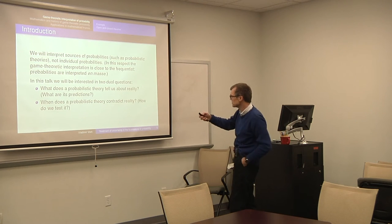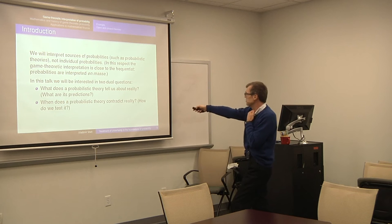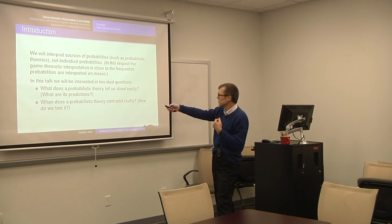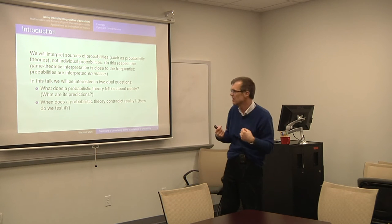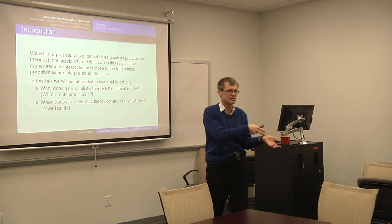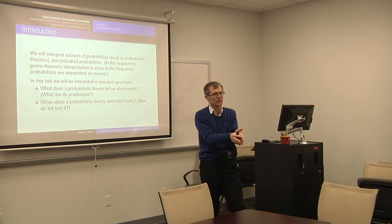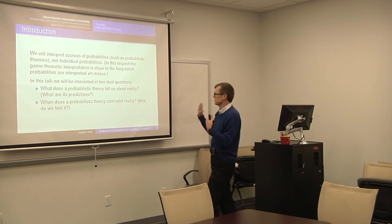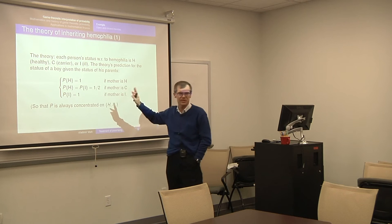We have two dual questions. If you can answer one, we can usually answer the second one. We want to understand what this theory tells us about reality — what it predicts. We want to be able to extract some predictions. And we also want to say that some theory contradicts reality or vice versa — that they are not compatible, that empirical data tells us this theory is wrong. So we want to have some way of testing theories, and we want to use this interpretation to answer these two kinds of questions.